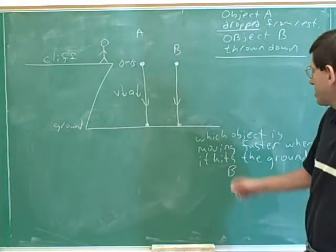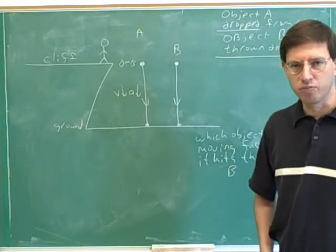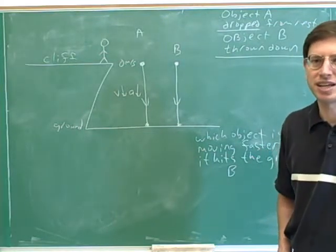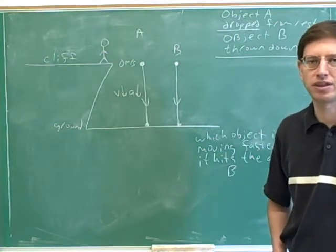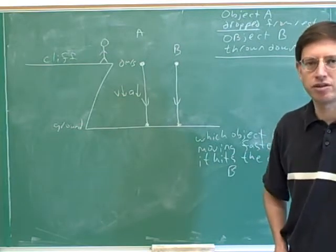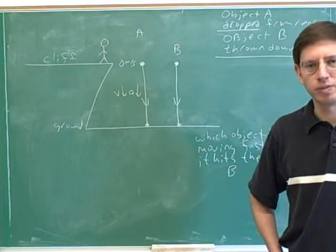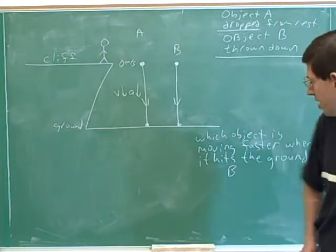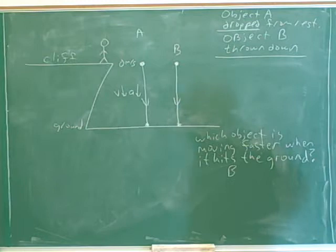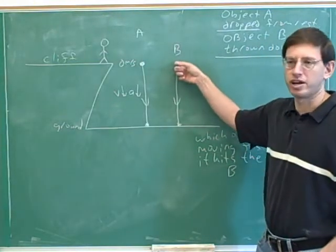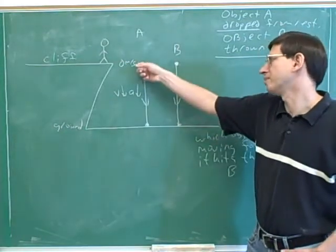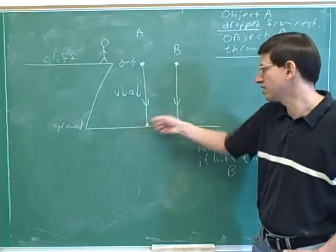Let me remind you that what this question is asking about is which object is moving faster the instant before it hits the ground. Obviously, the instant after they hit the ground, they're both motionless. But in kinematics, the instant after they've hit the ground, the only force isn't gravity anymore — there's also a force from the ground. So we want to analyze the instant before they hit the ground, when they're still both under the influence only of gravity. Object B is the answer because B had already been moving towards the ground when it started, so gravity speeds it up even more, whereas object A was just starting from zero and will never reach the same speed as object B over the same distance.